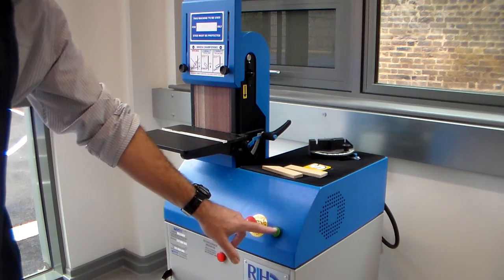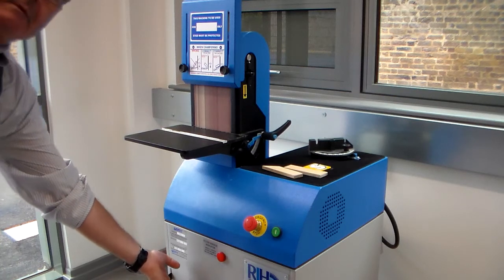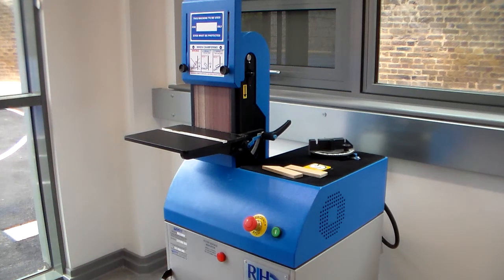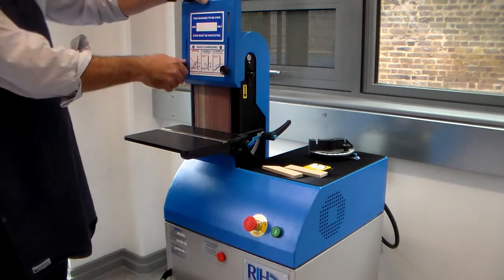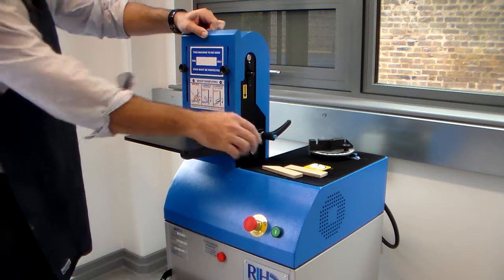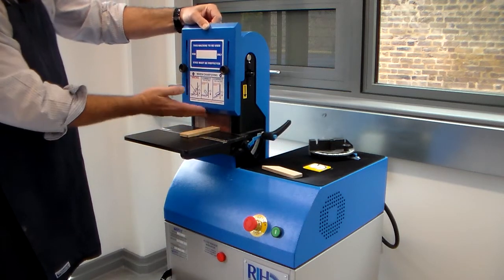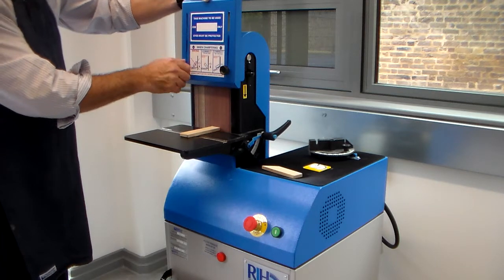If we turn it on, we can also use the emergency stop. Here, we've got a guard, which can be closed down, and should be closed down to keep the working area that's exposed of the belt to a minimum.